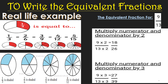Equivalent fractions — the meaning of 'equivalent' is that the value will not be changed; it remains the same value. If you take one fraction and multiply or divide both the numerator and denominator by the same number, we get a fraction whose value is not changed. That is called an equivalent fraction.